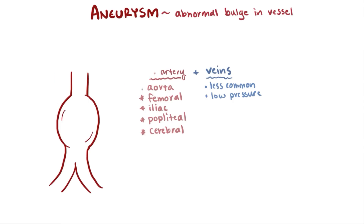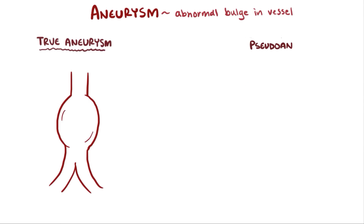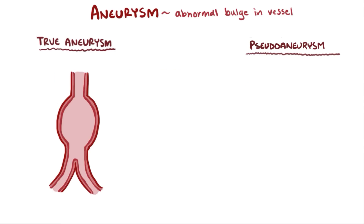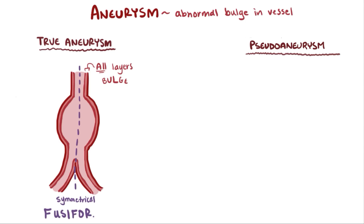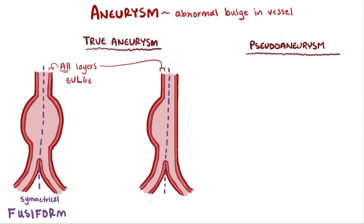There are two major categories of aneurysms: true aneurysms and pseudoaneurysms. In true aneurysms, all the layers of the blood vessel wall dilate together. True aneurysms that balloon out symmetrically on all sides of the blood vessel are called fusiform aneurysms, whereas asymmetrically shaped aneurysms balloon out only to one side of the blood vessel. This asymmetrical shape usually happens because one side of the blood vessel wall has had to put up with higher blood pressures, or because the wall was weaker on one side to begin with.